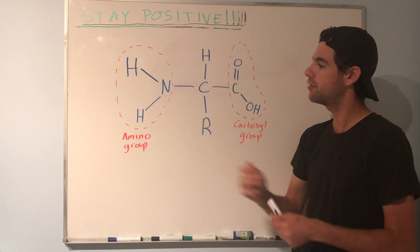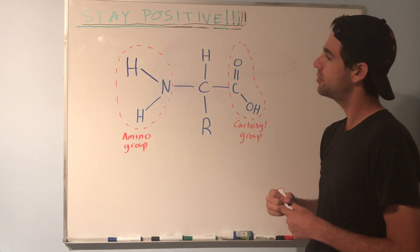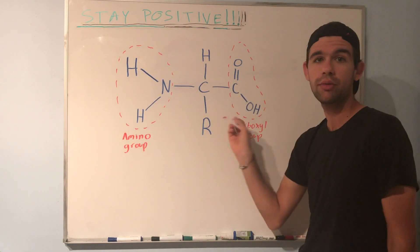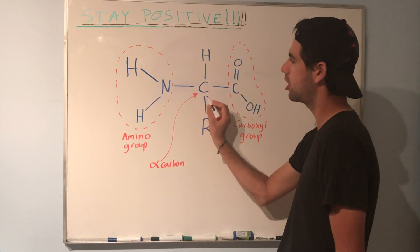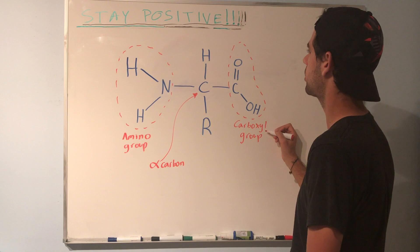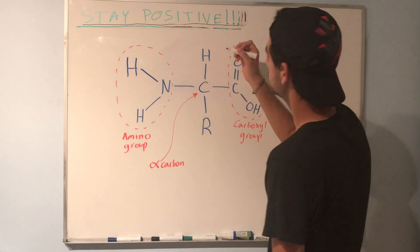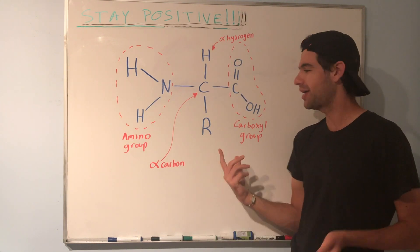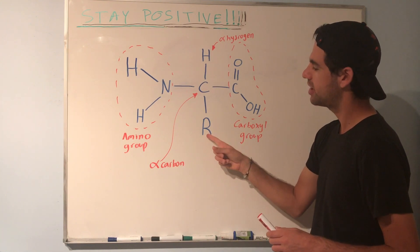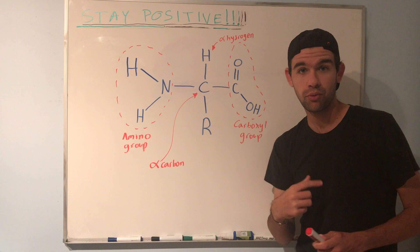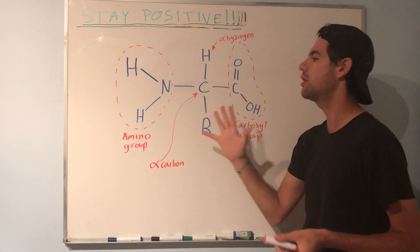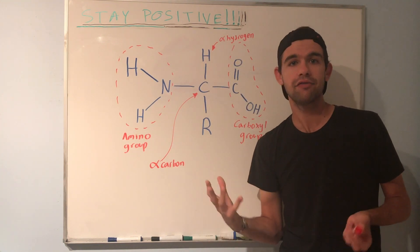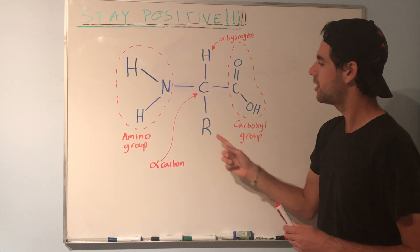All amino acids that you see will have an amino group and a carboxyl group. I've drawn a central carbon right here — we call this carbon the alpha carbon. The alpha carbon is attached to the amino group, the carboxyl group, a hydrogen which we call the alpha hydrogen, and an R group. All amino acids will essentially share the same amino group, carboxyl group, alpha hydrogen, and alpha carbon. But the R group is where they differ.